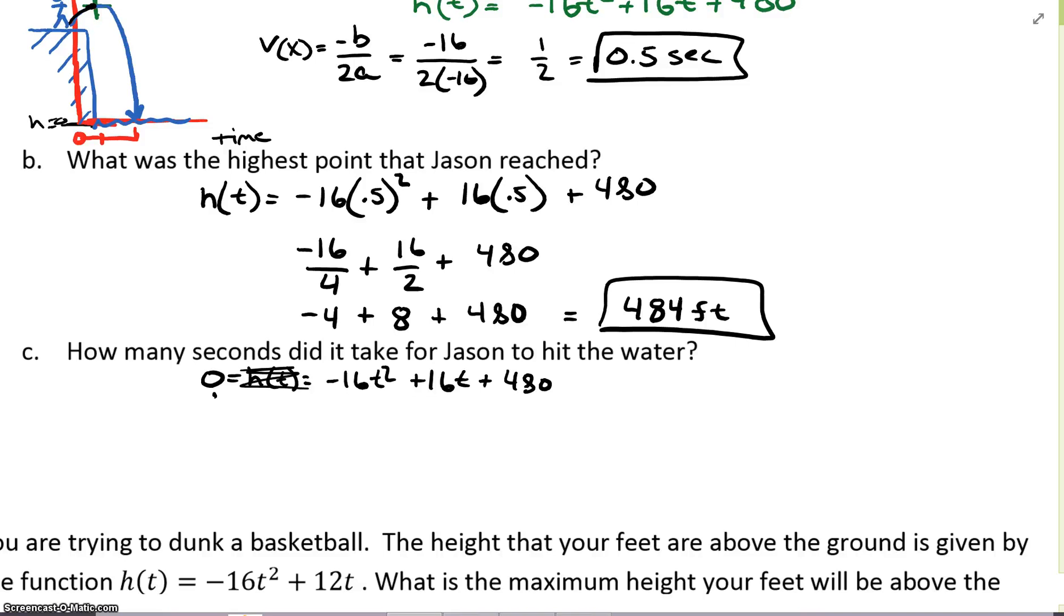First thing, is there a greatest common factor that we can factor out of everything? Absolutely. I can factor out a -16. So I'm going to divide everything by -16. So I'm going to get 0 equals t² - t - 30. I can set up my x factor. So I got t² - t - 30 equals 0.